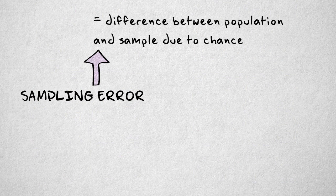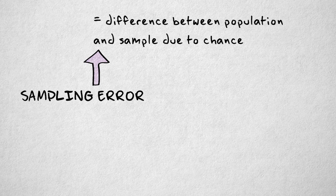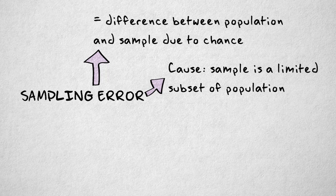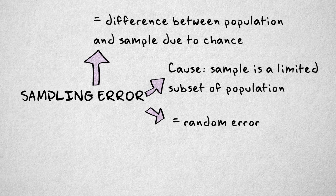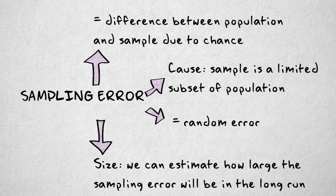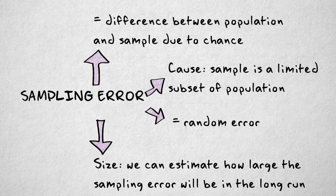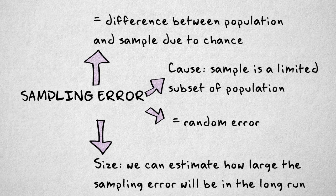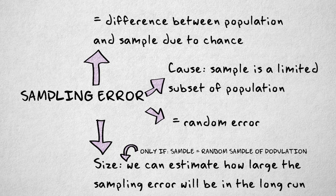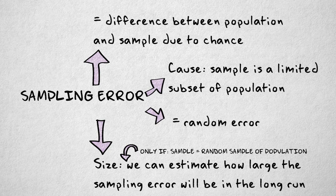Okay, so to summarize, sampling error is the difference between population and sample value due to chance, due to the fact that our sample is a limited, incomplete subset of the population. Sampling error is unsystematic, random error. It's comparable to the random error that makes a measurement instrument less reliable. We can estimate how large the sampling error will be in the long run, which allows us to conclude how accurate our sample value is likely to be. This only works under certain conditions. One of these conditions is that the sample is a random sample from the population.